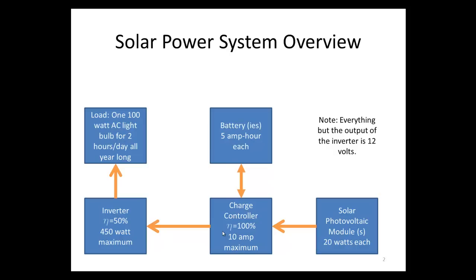We're also going to include batteries in our system. Batteries are rated in amp hours — one amp hour is providing one amp for one hour. Each battery can hold 5 amp hours, so we'll have to figure out how many we need. We also have solar photovoltaic modules, which take sunlight and make electricity. Each module is 20 watts, and we'll have to figure out how many of those we need as well.